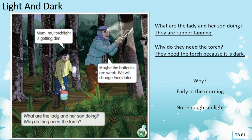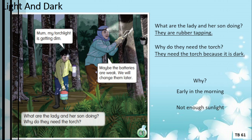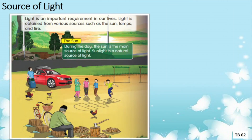Now we have come to our first topic for this lesson: sources of light. Let us read this statement together — light is an important requirement in our lives. Light is obtained from various sources such as the sun, lamps, and fire.